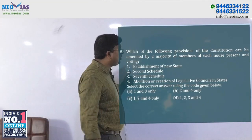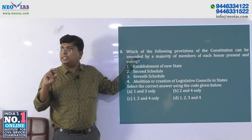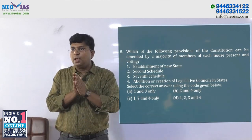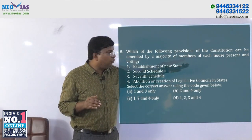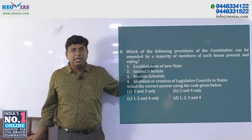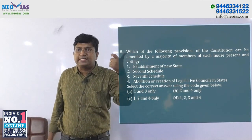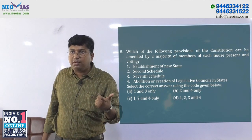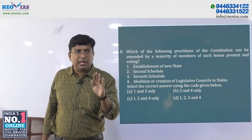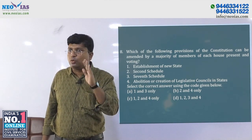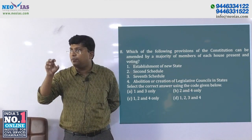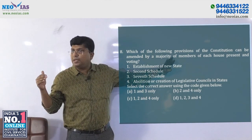Which of the following provisions of the constitution can be amended by a majority of members of each house present and voting? This means simple majority. Now, simple majority changes to the constitution cannot be called a constitutional amendment. The term constitutional amendment is prescribed under Article 368, which says both houses must pass it by a two-thirds majority — that is special majority.